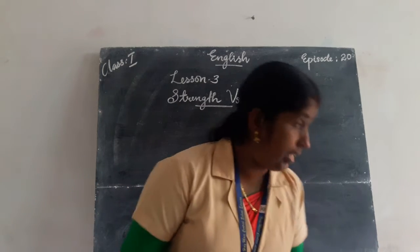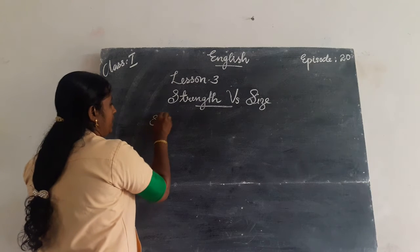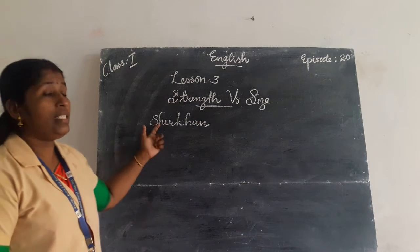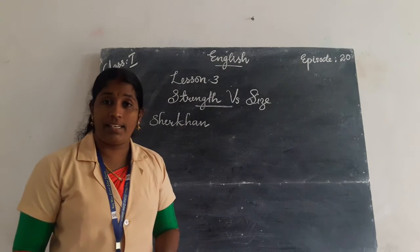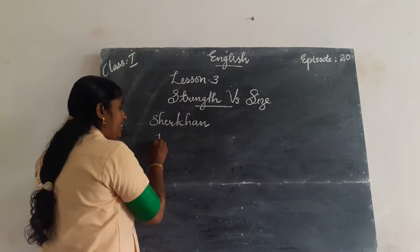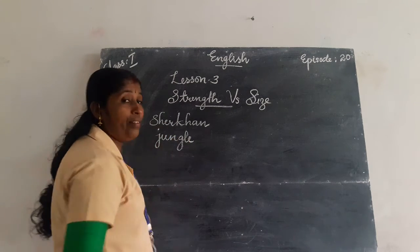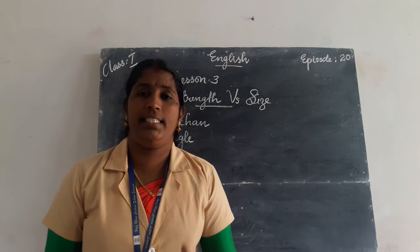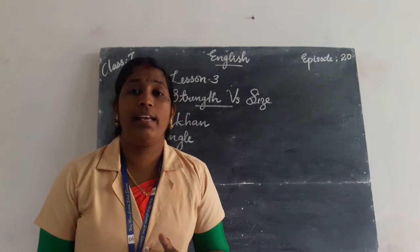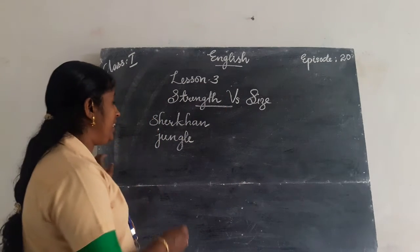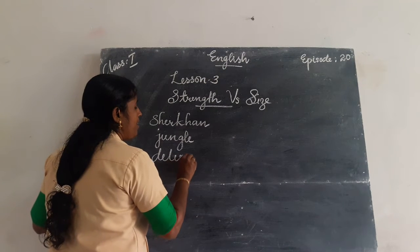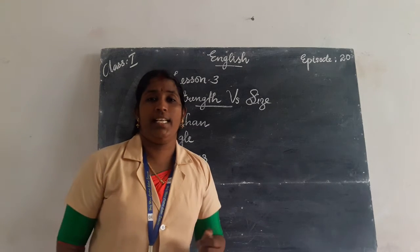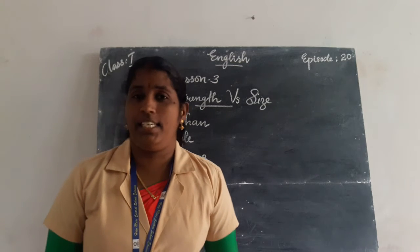Let us look at the tough words from the previous class. Shere Khan — S-H-E-R-K-H-A-N. Next word is jungle — J-U-N-G-L-E — meaning forest, F-O-R-E-S-T. The next word is delicious — D-E-L-I-C-I-O-U-S — meaning tasty. Next word is tickling — T-I-C-K-L-I-N-G.